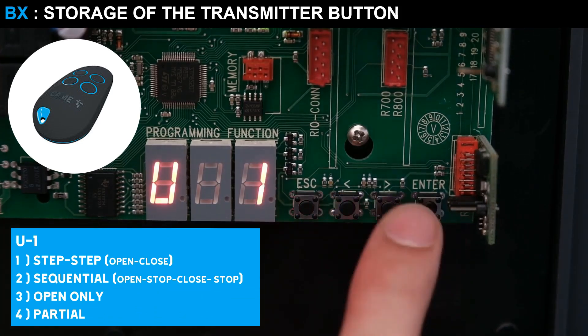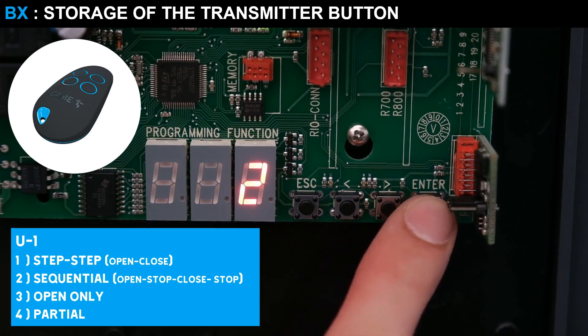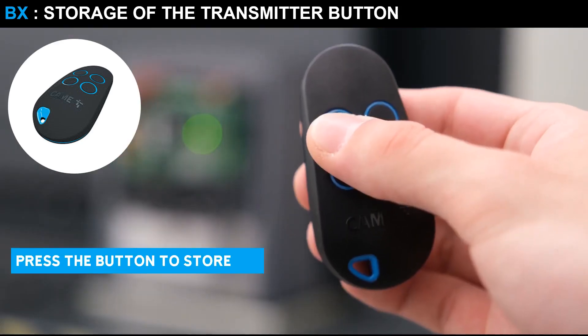1 for step-by-step, 2 for sequential, 3 for open, and 4 for partial opening. Press Enter to confirm. The number of the user to whom the transmitter button will be associated will appear on the display. Press the button you want to register.